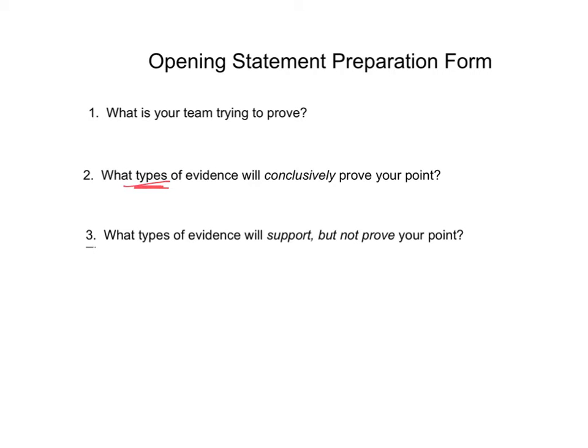Then in number three — what types of evidence will support but not prove your point? This is where I want you to list the types of evidence, again types, in general, from those notes, that you can use to suggest that a chemical change has or has not happened, but that are not proof positive. For example, things like a color change could indicate that a chemical change has happened, but it's not conclusive. So this is the kind of thing that would go in number three.